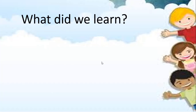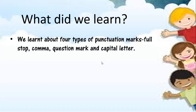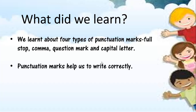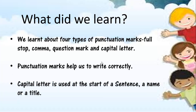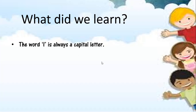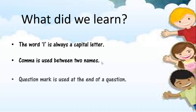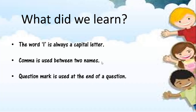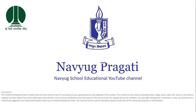Children, what did we learn today? Let us sum up. We learnt about four types of punctuation marks: full stop, comma, question mark and capital letter. Punctuation marks help us to write correctly. Capital letter is used at the start of a sentence, a name or a title. The word I is always a capital letter. Comma is used between two names. Question mark is used at the end of a question. Thank you and goodbye!